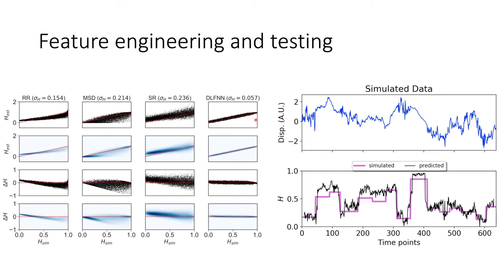Each of these test points represents a trajectory of one hundred time points in length — one hundred points to average over for the MSD, and one hundred points to input into the neural network. On the right, we have a multifractional Brownian motion simulation showing the trajectory value, the simulated Hurst exponent as a purple thick line, and the estimated Hurst exponent using a window by the neural network as the black line. The window size was 14 points, and we can see it does a relatively good job of estimating the Hurst exponent.